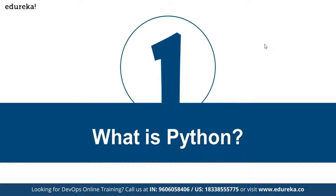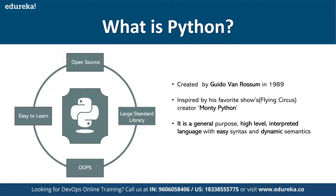Python is one of the open source programming languages, considered to be the most widely used or number one programming language that most organizations are using. There are multiple reasons why Python has become very famous. First, it is open source, which means you can download it for free. It is also easy to learn. It can help us implement both process-oriented programming as well as object-oriented programming, unlike languages like Java which are purely used for OOP concepts. Python gives you a lot of flexibility in terms of how you can implement it.